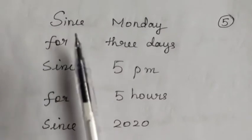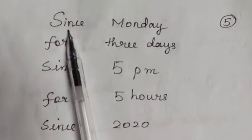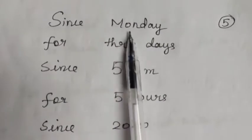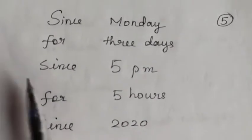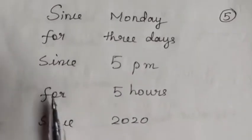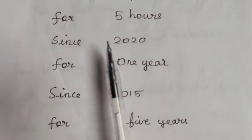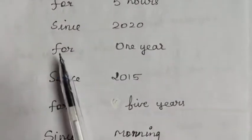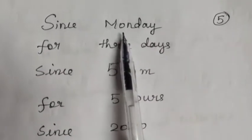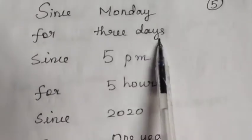Important distinction: 'since' is used with a point of time — for example, since Monday, since 5 pm, since 2020. 'For' is used with a period of time — for example, for 3 days, for 5 hours, for one year. Monday is a specific point; 3 days is a duration. Since 5 pm is a point; for 5 hours is a period.